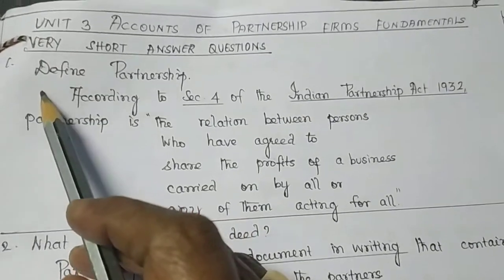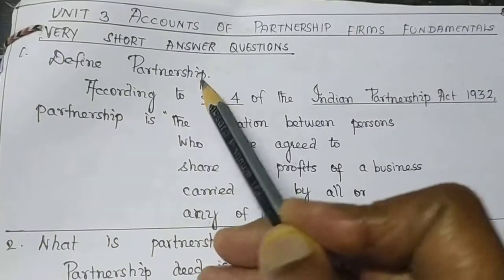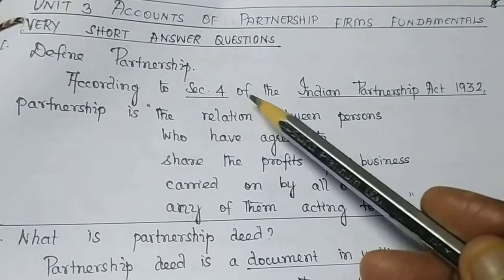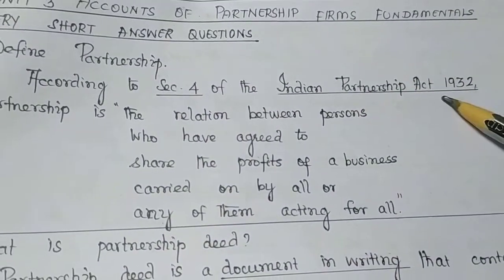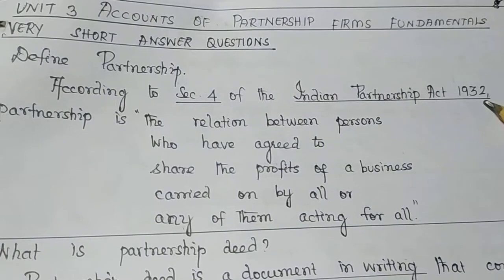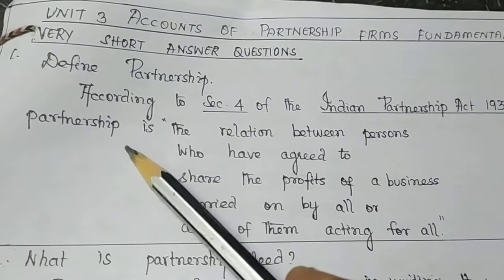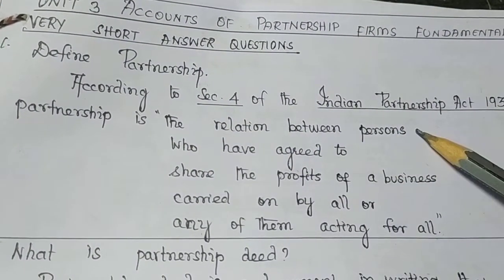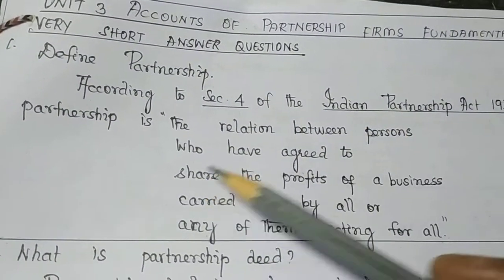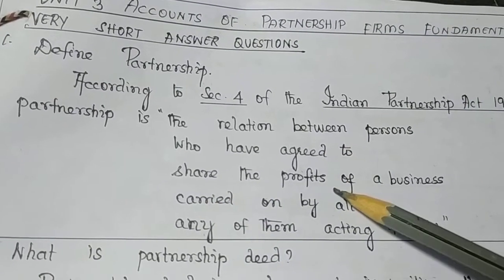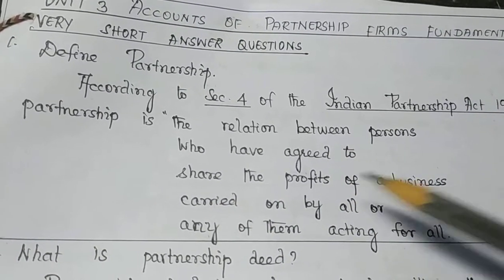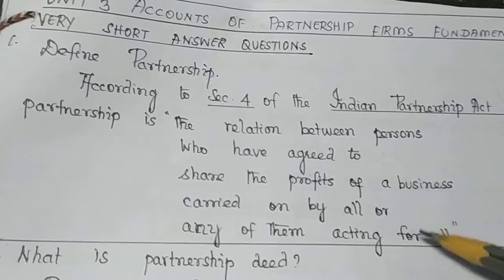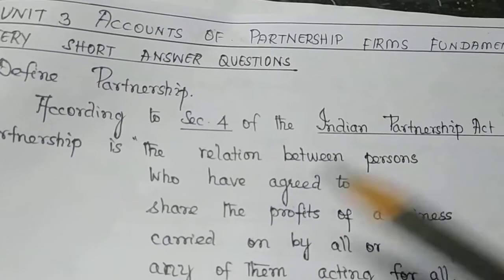Question Number 1: Define Partnership. According to Section 4 of the Indian Partnership Act 1932, Partnership is the relation between persons who have agreed to share the profits of a business carried on by all or any of them, acting for all.